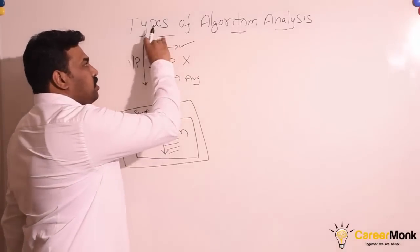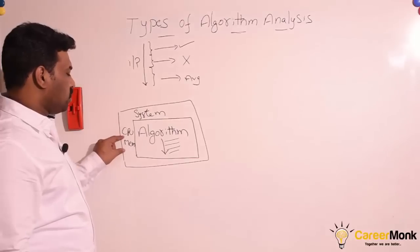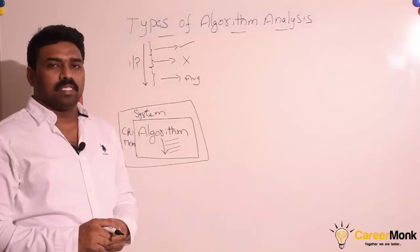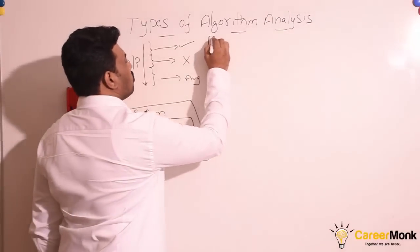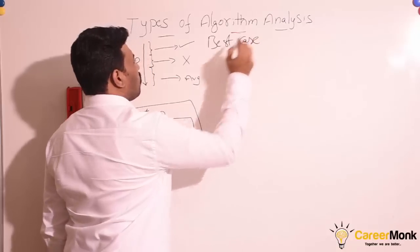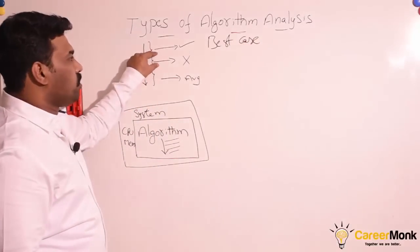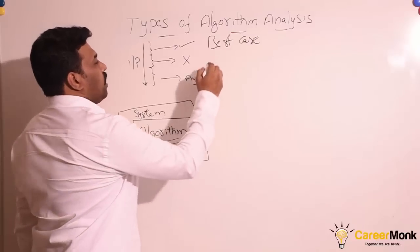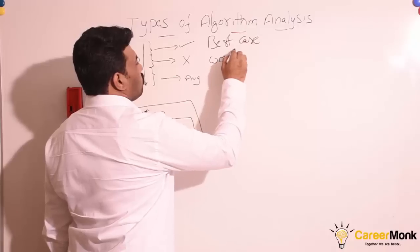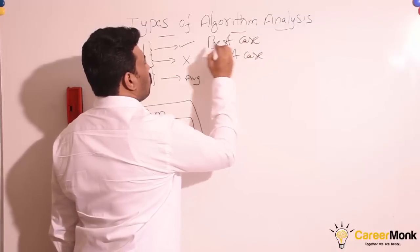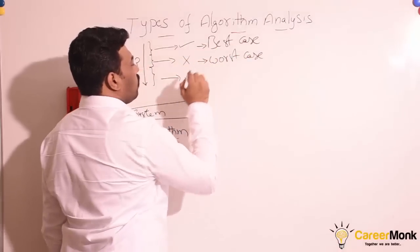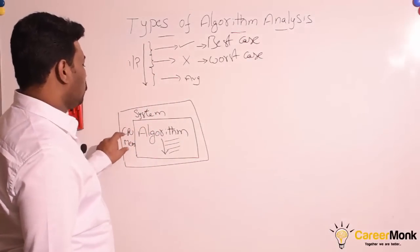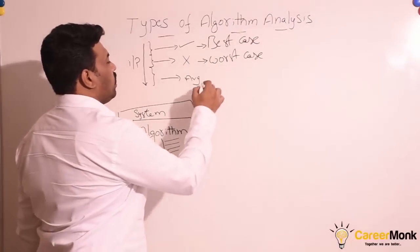The set of inputs for which the algorithm consumes less memory and CPU, we call it the best case. The set of inputs for which the algorithm consumes more memory and CPU, we call it the worst case. And the set of inputs for which the algorithm consumes average system resources like CPU and memory, we call it the average case.